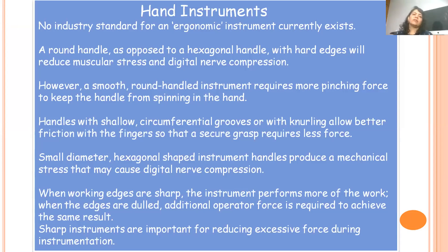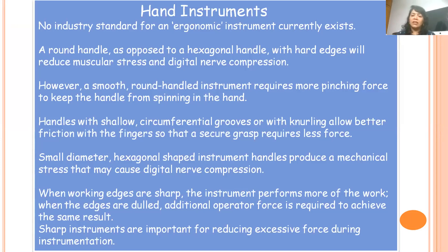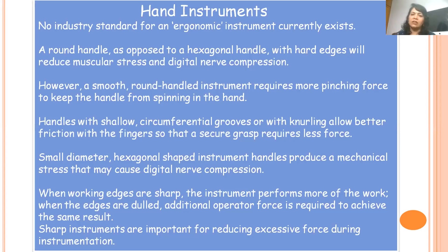Coming to ergonomics in hand instruments: so far no industry has come up with fully ergonomic instruments, but you have to understand that a round handle as opposed to a hexagonal handle with hard edges reduces muscular stress and digital nerve compression. A smooth, small round-handled instrument requires a lot of effort to hold tightly for long periods, causing muscle fatigue. Similarly, an instrument with a hexagonal cross-section causes digital nerve compression and muscle strain. Look for something which is shallow, circular, with circumferential grooves for automatic retention. Also make sure that the working edges of your instruments are sharp — otherwise the operator effort is higher, leading to strain on the muscles.